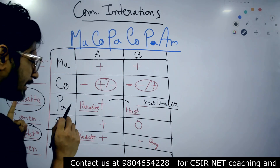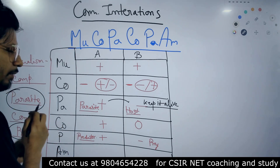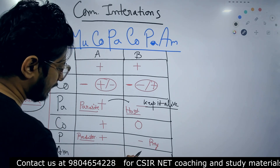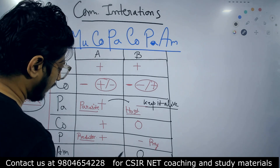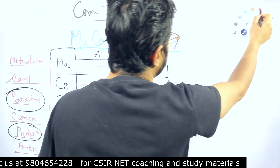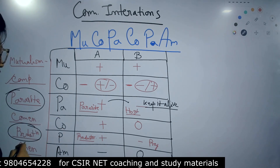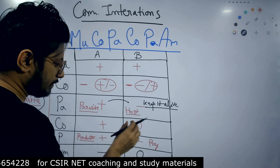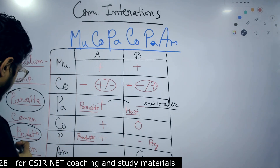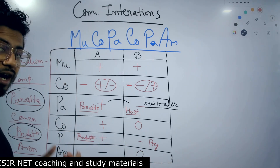Next is amensalism, which is different from commensalism. In amensalism, one is unharmed but the other one is harmed. Compare that to commensalism, where one is unharmed and the other one gets the benefit. In amensalism, one is unharmed but the other is harmed — that is the key difference.